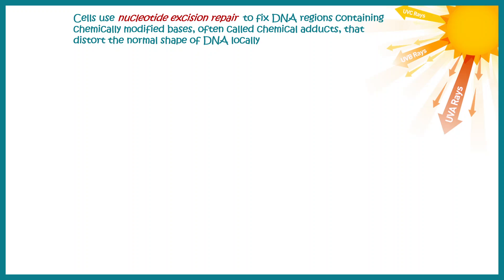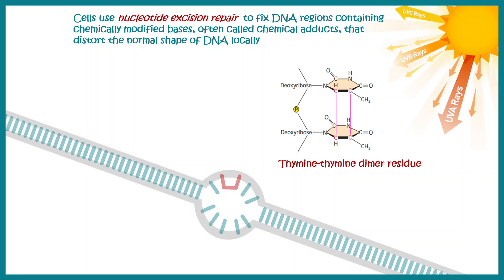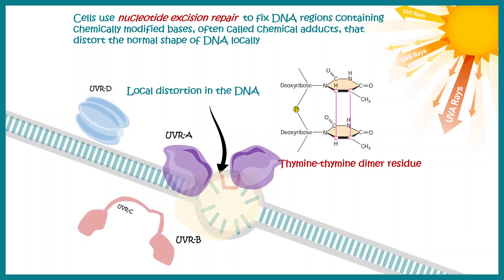Let's say there are two thymine bases which are adjacent to each other. UV radiation can lead to the production of a thymine-thymine dimer, which is one kind of DNA lesion. This kind of DNA lesion leads to a distortion in the DNA helix, and this distortion is detected by the nucleotide excision repair system, which further recruits components such as UvrA, UvrB, UvrC, and UvrD to repair this distortion.